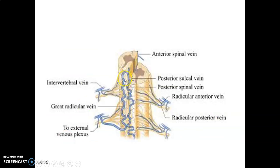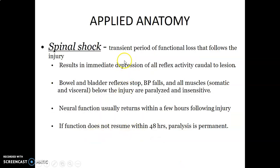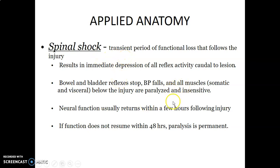This shows the anterior spinal vein, the great radicular vein, and you can appreciate the external venous plexus communicating with the epidural venous plexuses. For applied anatomy, we have spinal shock — a transient period where you lose function of the spinal cord after injury, resulting in immediate depression of all reflex activity below the level of the lesion. Bowel and bladder reflexes stop, blood pressure reduces, and muscles below the injury become paralyzed and insensate. Neural function may return within a few hours following injury, but if function does not resume within 48 hours, paralysis may be permanent.